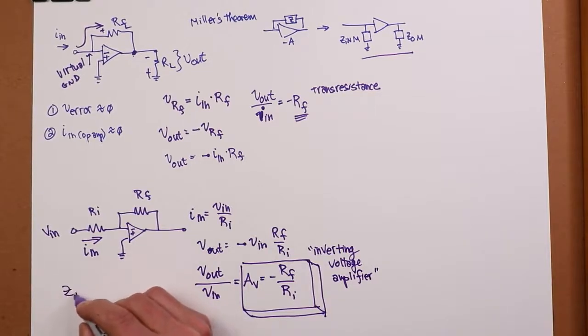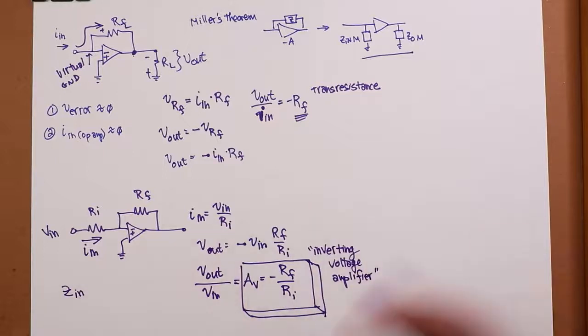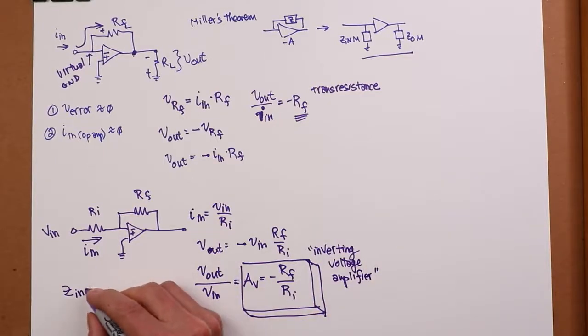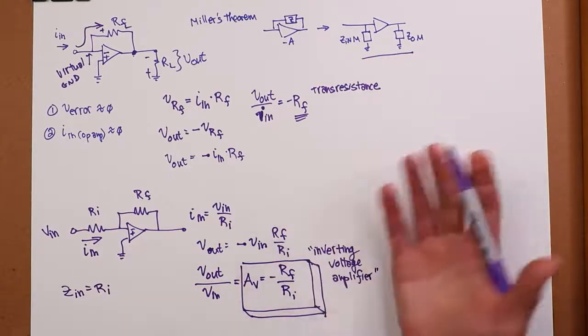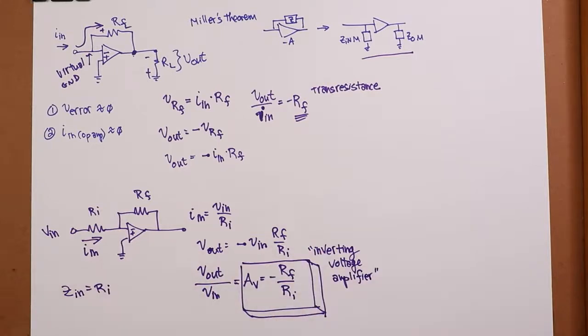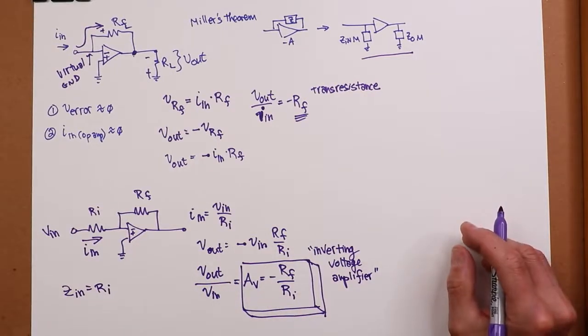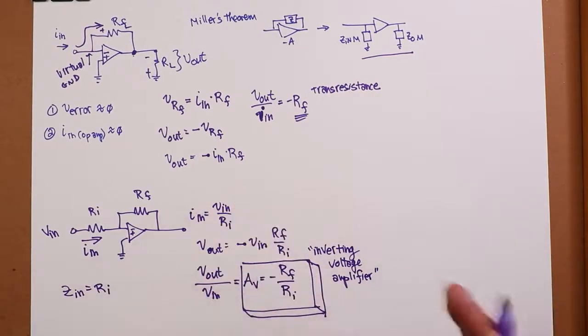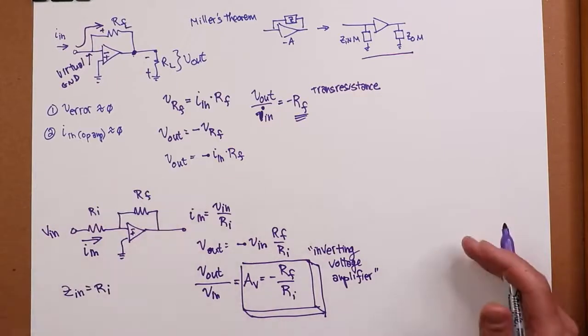One downside on this is the input impedance is controlled by RI. And the series parallel ZN is just huge at low frequencies. In this circuit, ZN is set by RI. So you can't really get, practically speaking, as high of an input impedance on this circuit as you can with the series parallel.